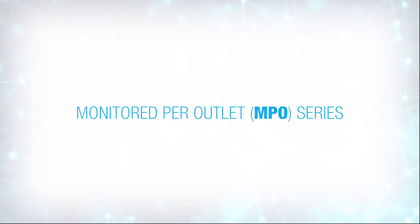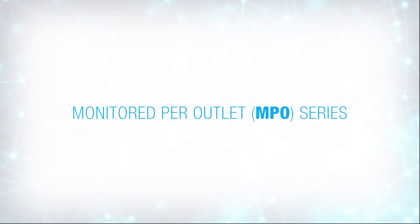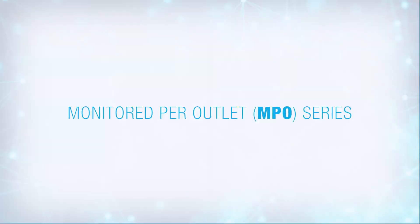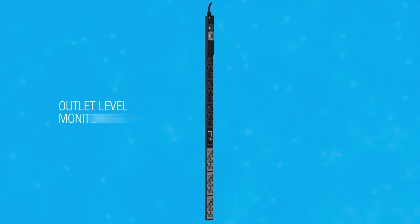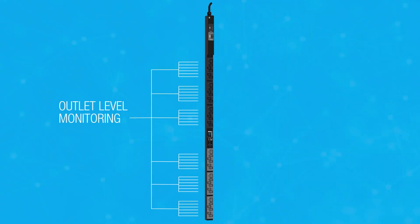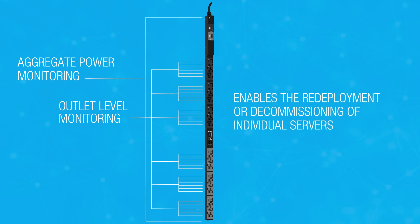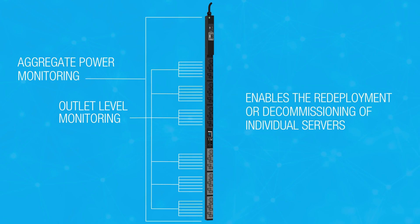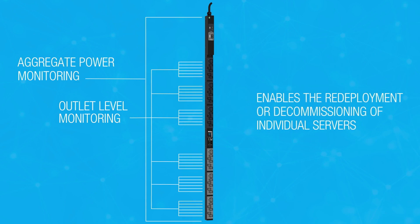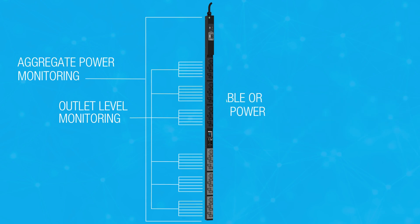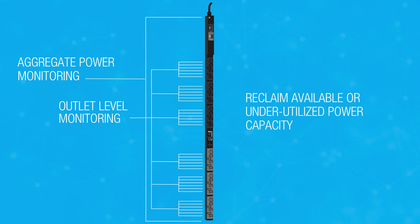The monitored per outlet, or MPO series, monitors the power levels for individual outlets as well as the aggregate. This additional level of granularity is vital for tasks such as redeploying or decommissioning servers, as well as reclaiming unused capacity.